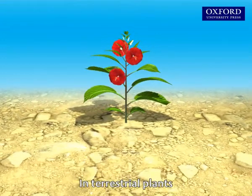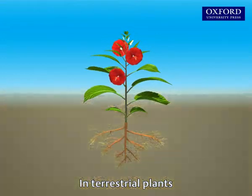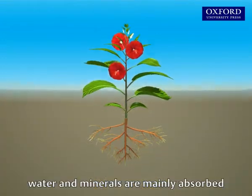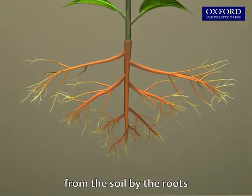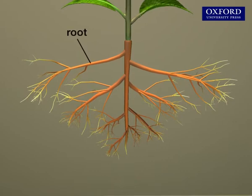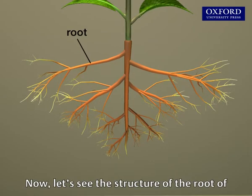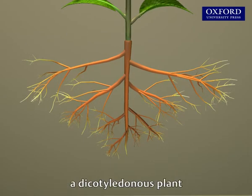In terrestrial plants, water and minerals are mainly absorbed from the soil by the roots. Now let's see the structure of the root of a dicotyledonous plant.